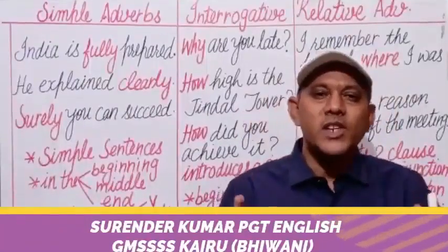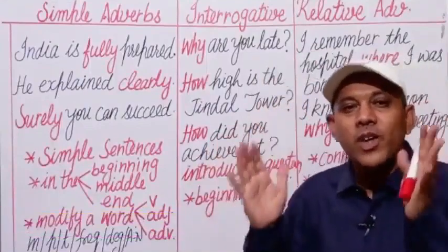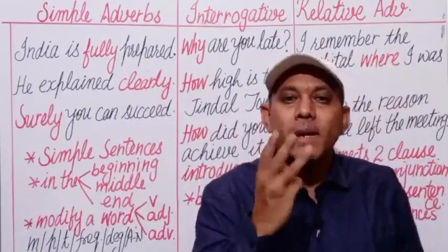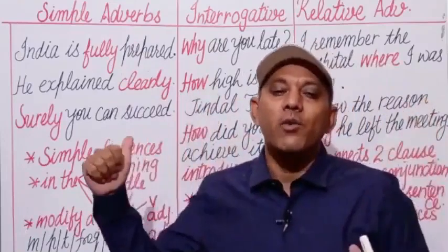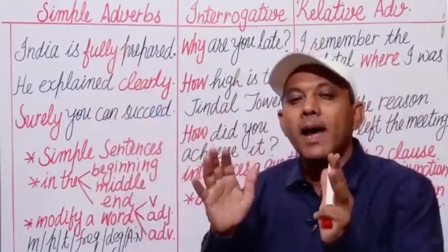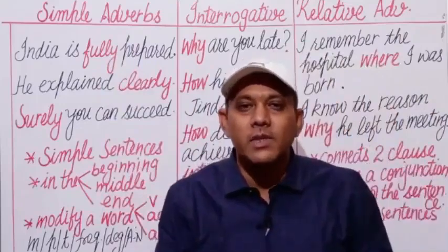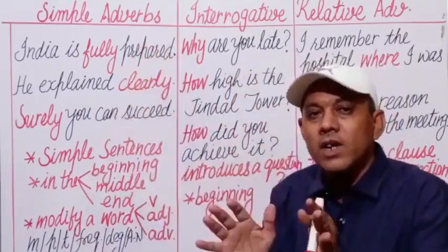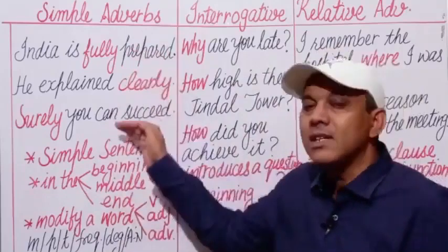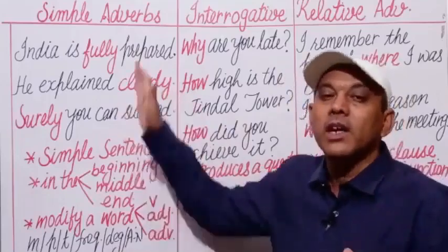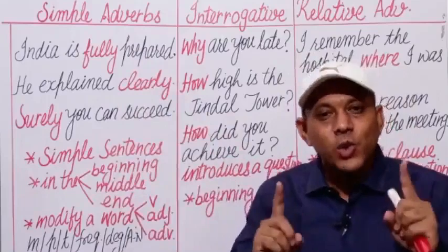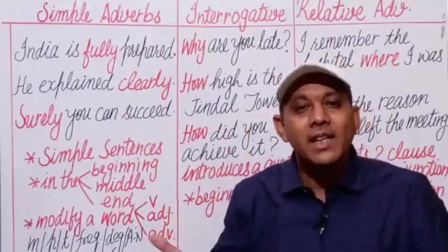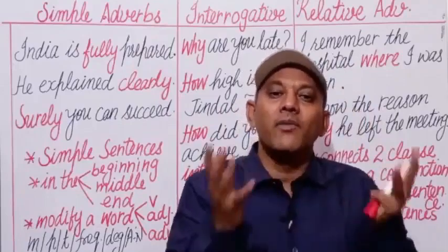Dear students, good morning. Today we are going to discuss different kinds of adverbs. We can divide adverbs into three basic categories based on their use in sentences. First is simple adverbs. Second is interrogative adverbs. And the third is relative adverbs. Simple adverbs are used in simple sentences to modify a word — a verb, an adjective, an adverb, a phrase, or the whole sentence.